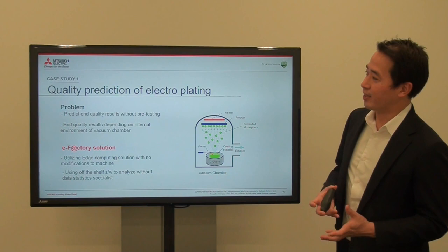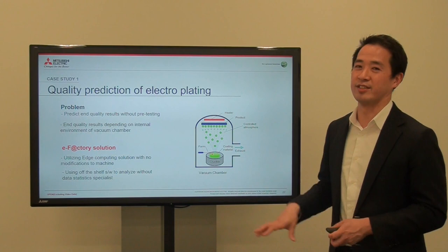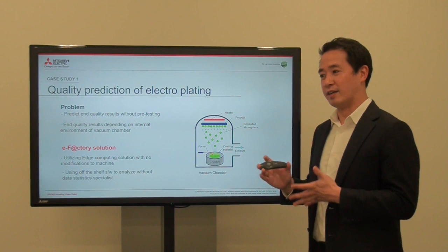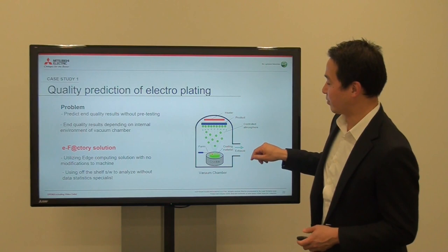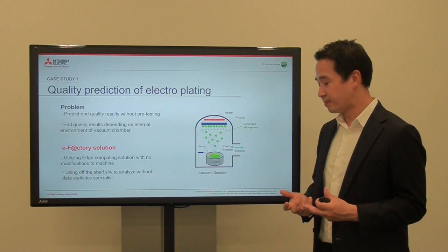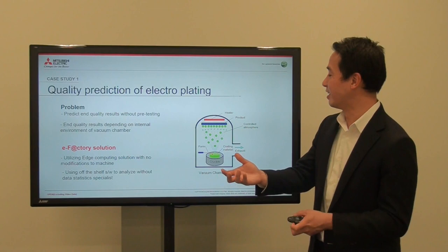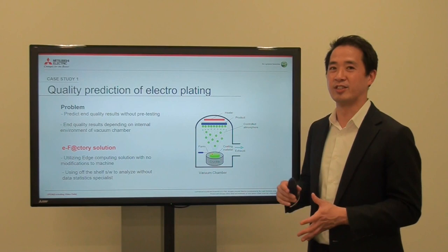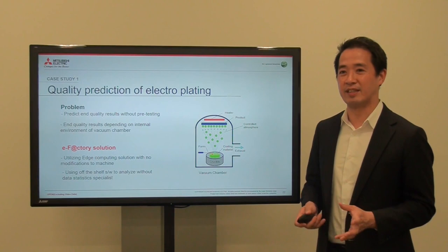What our customer wanted was to do mass production without doing a pre-test, because they were doing pre-tests before this data project. When they wanted to start a production run, they'd first take one part, put it in the chamber, produce the part, take it out, do a quality check, and see if it was okay or not. If it was okay, they'd go directly into mass production. If not, they'd clean up the chamber and then go to mass production.